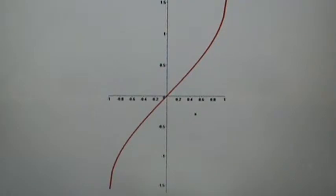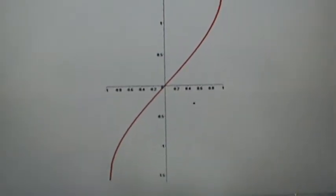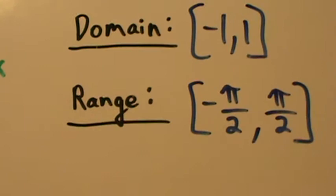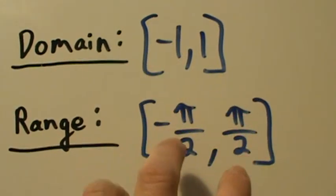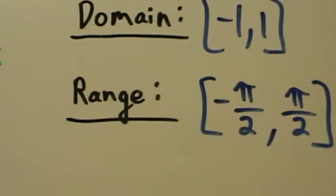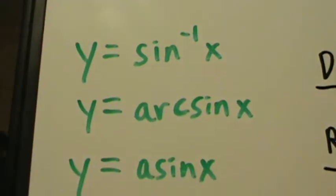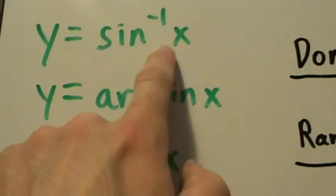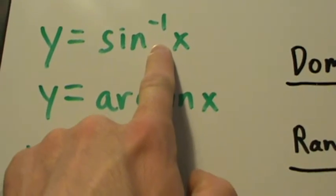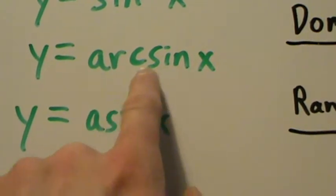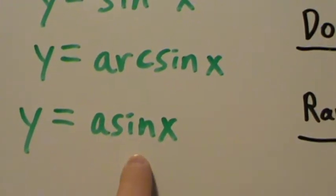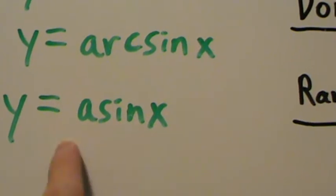Let's talk about some of the properties and how it relates to the sine function. As we saw in the graph, the domain is negative 1 to 1 and the range is negative pi over 2 to positive pi over 2 — square brackets, because we do include the endpoints. Here's some notation: y equals sine inverse of x, where the negative 1 in the exponent indicates inverse. Or we could say y equals arc sine of x, or y equals a sine of x — short for arc sine. These all three say exactly the same thing: the inverse sine of x.